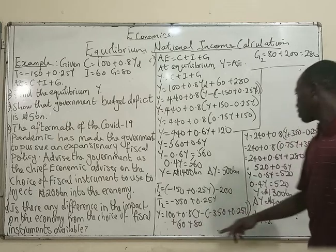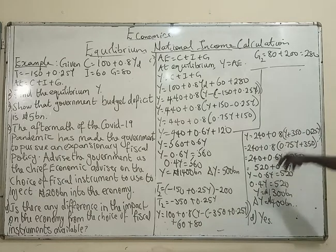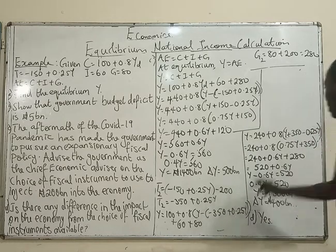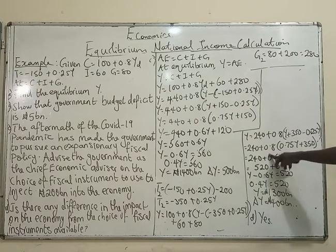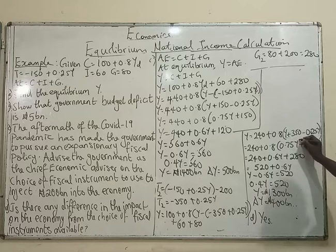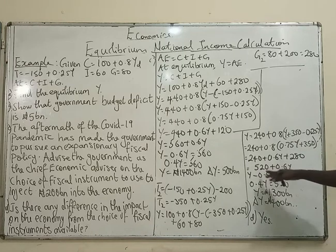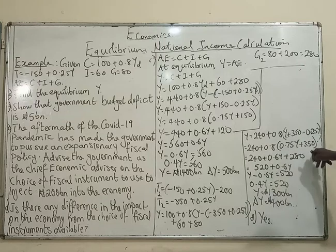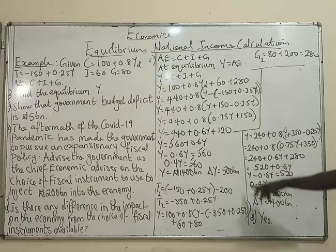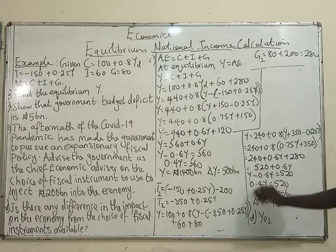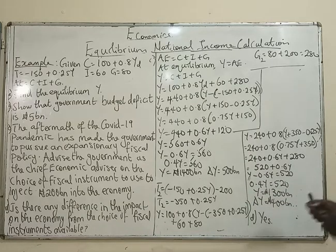The constants 100 plus 60 plus 80 give 240. Then 240 plus 0.8 times bracket Y minus 0.25Y equals 0.75Y, plus 350. So Y equals 240 plus 0.6Y plus 280. Adding constants: 240 plus 280 is 520, so Y equals 520 plus 0.6Y. Collecting like terms: 0.4Y equals 520, therefore Y equals 1,300 billion. The change in Y is 400 billion.